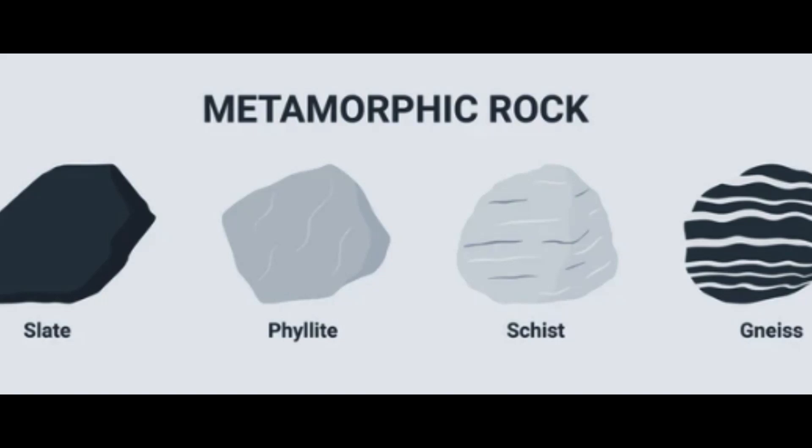Slate is a fine-grained, low-grade metamorphic rock that is formed from shale or clay. The minerals in slate are typically mica, chlorite, and quartz. Slate has a well-developed foliation, or layering, that is visible to the naked eye. The foliation is a result of the alignment of the minerals during metamorphism.